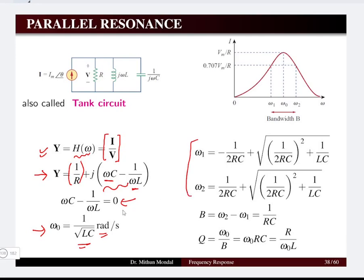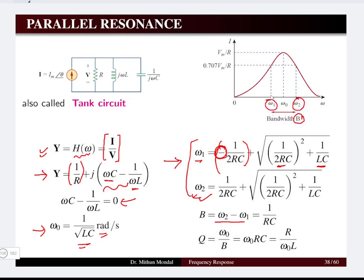The derivation for ω1 and ω2, the half-power frequencies for the parallel RLC network, uses a formula slightly different from what we derived for series resonance. Here ω1 is given by minus 1/(2RC) plus the square root of (1/(2RC))² plus 1/(LC), and for ω2 the negative sign vanishes, giving the same expression with a positive sign. The bandwidth is ω2 minus ω1, which equals 1/(RC) of the network.